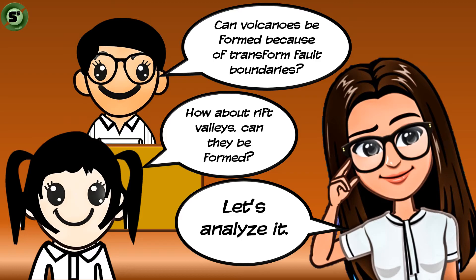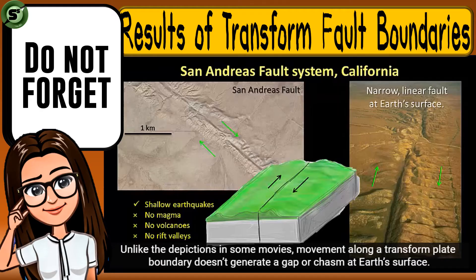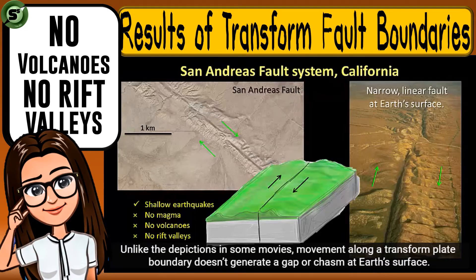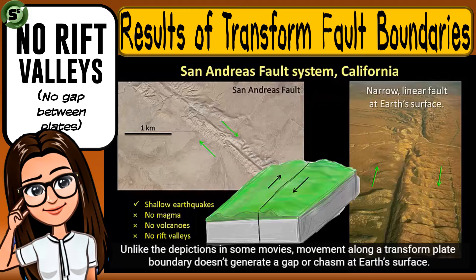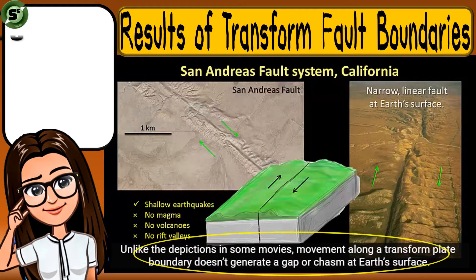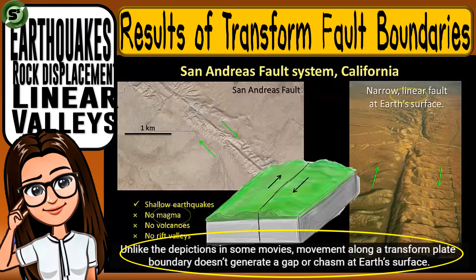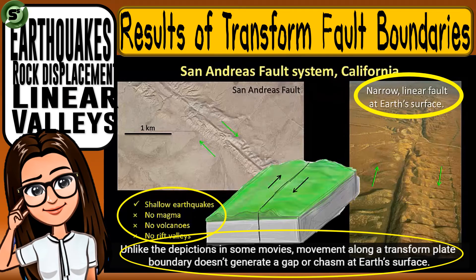These are the things you should not forget. Transform fault boundaries do not result in the formation of volcanoes nor rift valleys. In absolute transform fault boundaries, the subduction zone is not involved, thus the crust will not be melted to form magma. No rift valleys will be formed. The gliding plates do not generate a gap. Volcanism will not happen in pure transform fault boundaries. The sure results of transform fault boundaries are frequent earthquakes, rock displacement, and fault along a narrow valley.